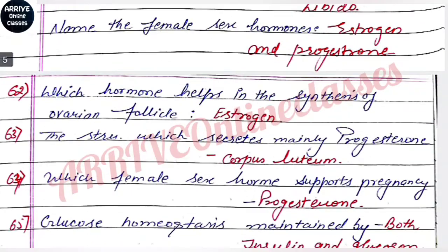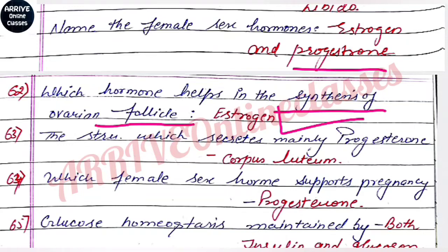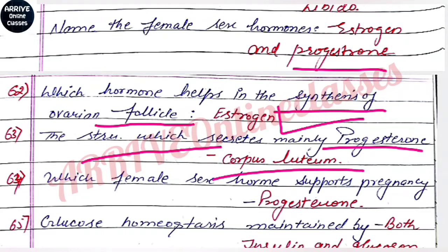Female hormones are estrogen and progesterone. The hormone that helps in the synthesis of the ovarian follicle, which we call Graafian follicle, is estrogen. The structure that mainly secretes progesterone is the corpus luteum. When you study Reproduction in Organisms in Class 11 NCERT, there is the role of hormones and the development of Graafian follicle in the ovary.